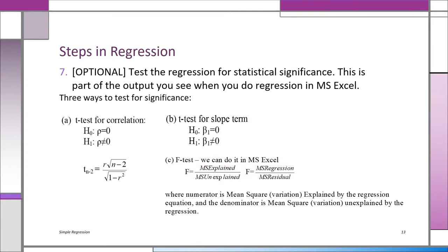There are three ways to test regression or correlation for significance. You can test r directly; you can test the slope term where H0 is b1 = 0; or you can use the F-test, which appears in Excel's printout. The important thing is: you do have to test for significance — you want to make sure there's a relationship between x and y. Otherwise, don't do regression or correlation.